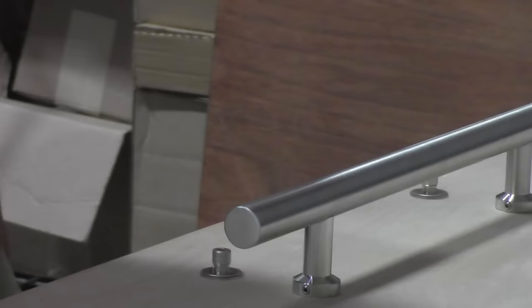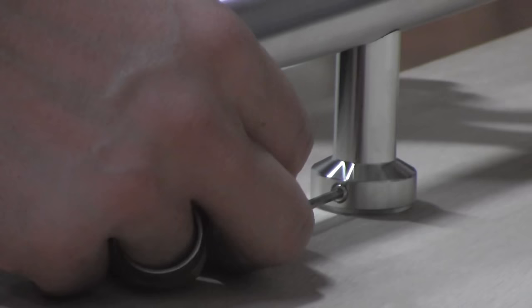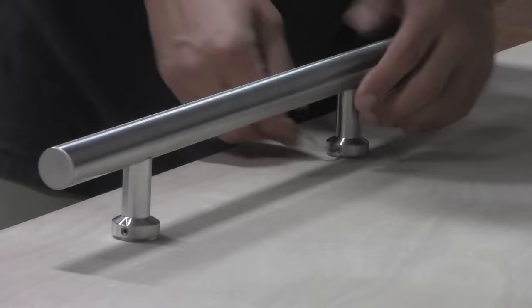To install the back-to-back handles, apply the handle over the nuts from the other handle on the opposite side and tighten down the set screw on both posts.